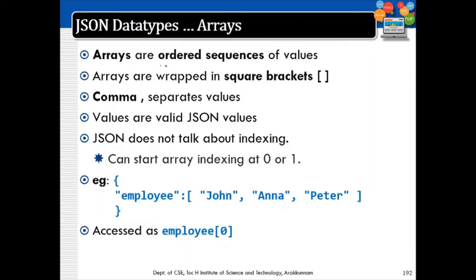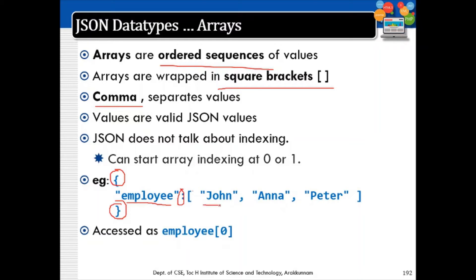Moving on to arrays. Arrays are ordered sequences of values, wrapped in square brackets as mentioned earlier, with commas used as separators. To write an array: within curly braces, give the name of the array in double quotes, then a colon, then start the square bracket to give values one by one in comma-separated format. Arrays can be accessed using the index, which starts at zero.